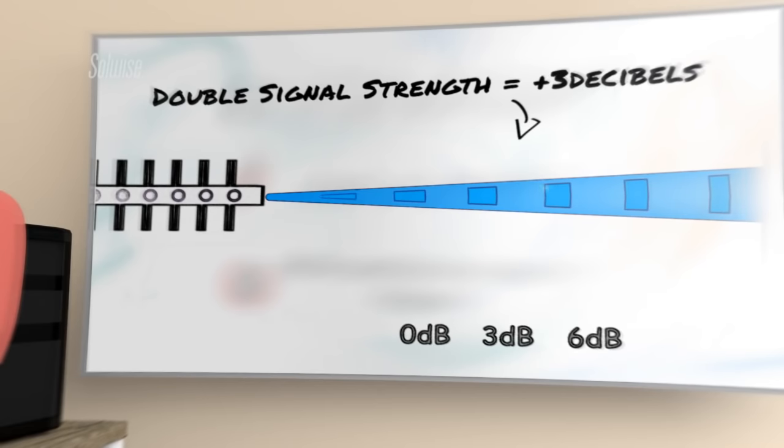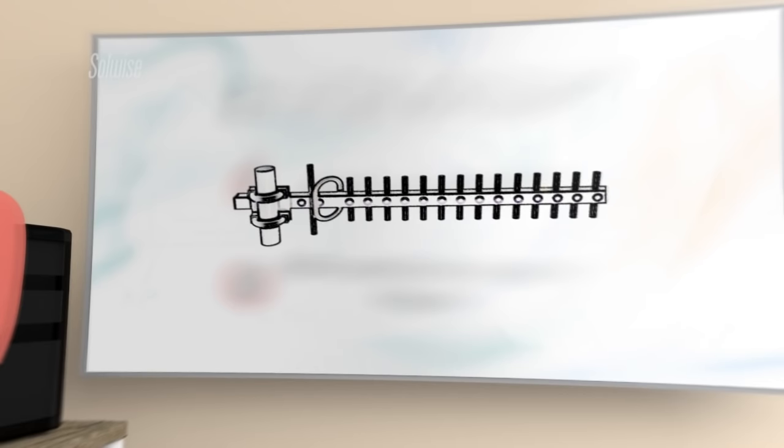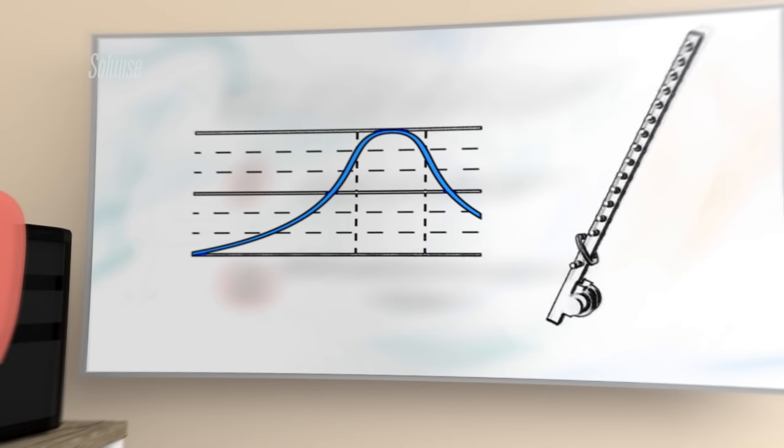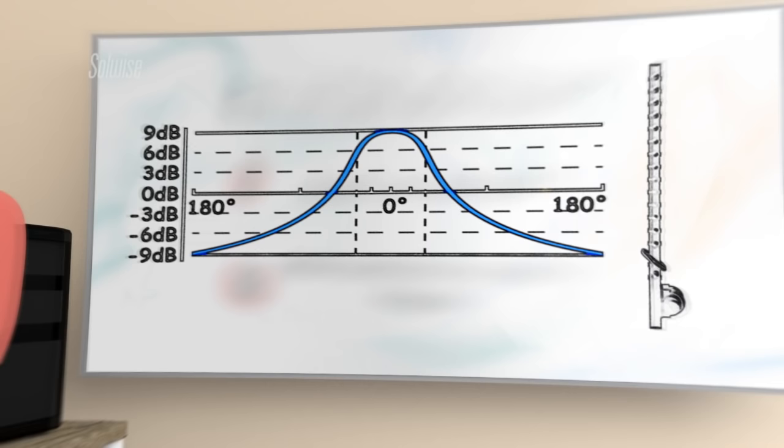There are two ways to describe the radiation pattern. If we draw a graph of signal strength against direction, we get something like this. Directly ahead, which we'll think of as zero degrees, we have a gain of 9 decibels. To the sides and behind, we have effectively no signal at all. We've drawn this as minus 9 decibels.